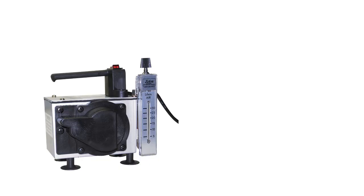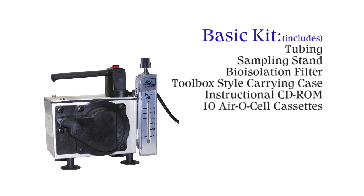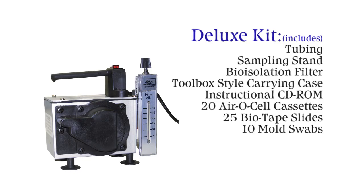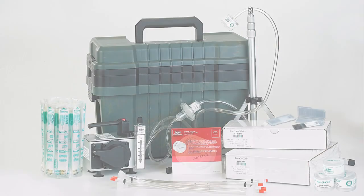The Zephon Z-Lite IAQ is available as a basic kit with 10 aerosol cassettes, or as a deluxe kit with 20 aerosol cassettes, 25 biotape slides, and 10 mold swabs.